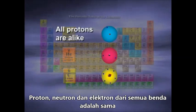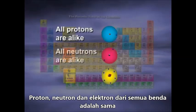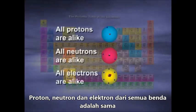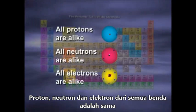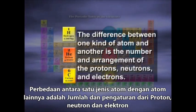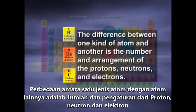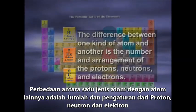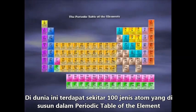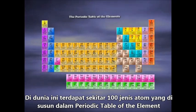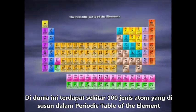All protons are alike, all neutrons are alike, and all electrons are alike. The difference between one kind of atom and another is the number and arrangement of the protons, neutrons, and electrons. There are over 100 different kinds of atoms, and they're listed in the periodic table of the elements.